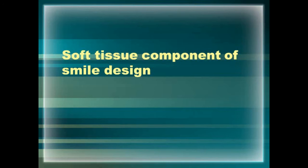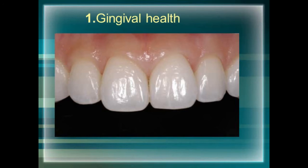Now let us discuss the soft tissue components of smile design. There should be a harmonious relationship between the various dental proportions and the soft tissue components. For a proper aesthetic smile there should be proper balance between these two, with no over-dominance of either. Under soft tissue components, we discuss four factors: gingival health, gingival level and harmony, interdental embrasures, and smile line.